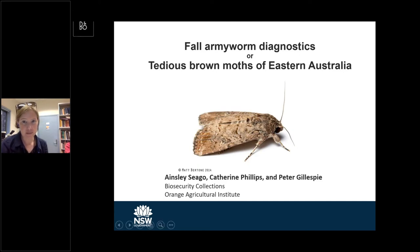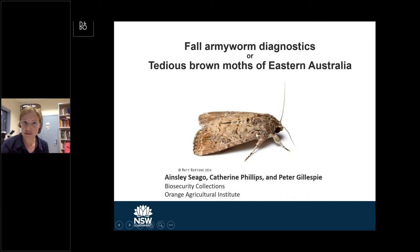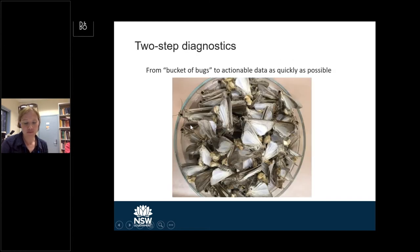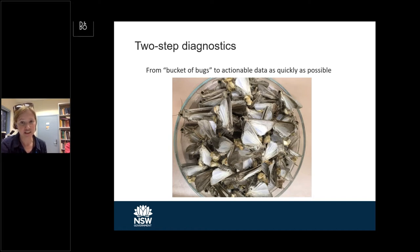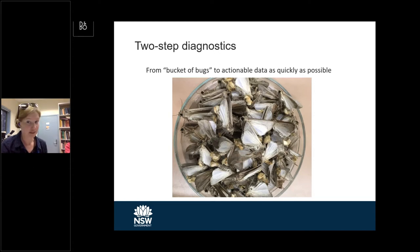Hi there. I'm here as one of three people managing the diagnostics for fall armyworm at the Orange Agricultural Institute, and I want to talk about the two-stage diagnostic process that takes us from a bucket of unidentified, undifferentiated brown moths to things that are actually suspect fall armyworms and potential members of that species as quickly as we can.